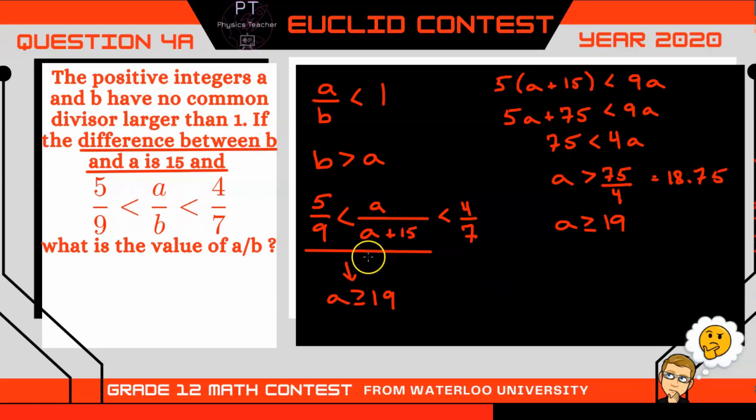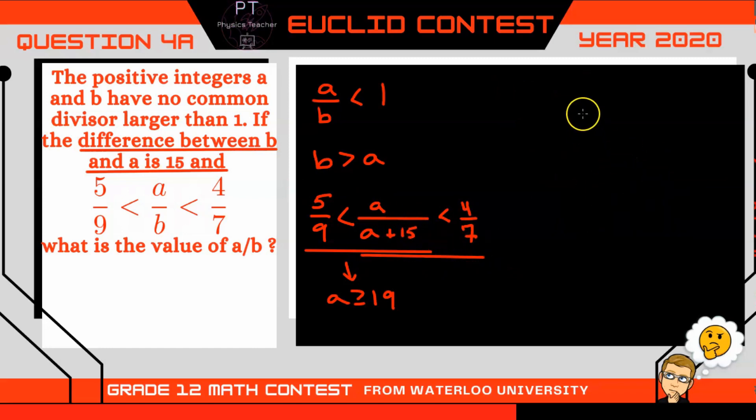Well, now let's analyze this right side of the inequality. Alright, so cross multiplying the right side, I'm going to get 7A is less than 4 times A plus 15. Alright, so let's distribute that 4. So we'll get 4A plus 60.